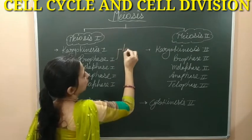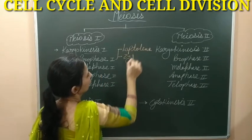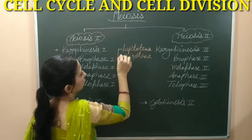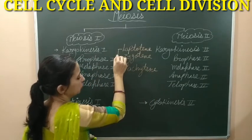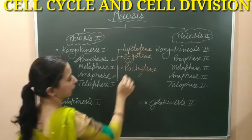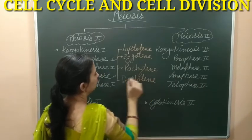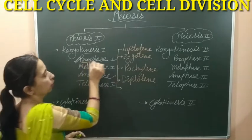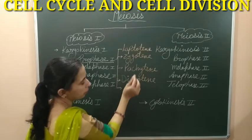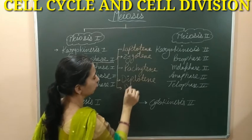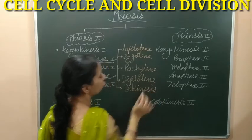The sub-phases of prophase 1 are: the first phase is known as leptotene, then after that the next will be zygotene, next is pachytene, after that the next stage will be diplotene. These are the sub-phases of prophase 1, and the last sub-phase is diakinesis. So prophase 1 completes by passing through all these sub-phases: leptotene, zygotene, pachytene, diplotene, and diakinesis.